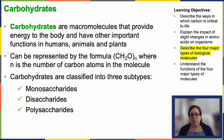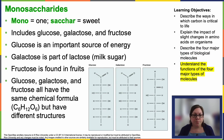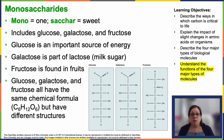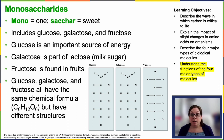Carbohydrates are vital both as an energy source and as structural elements. The basic building blocks of carbohydrates are simple sugars, or monosaccharides. I've got three examples here on the slide. Monosaccharides are the simplest carbohydrates, consisting of a single sugar unit. Common monosaccharides include glucose, the primary source of energy for cells; fructose, which is found in fruit; and galactose, which is a component of lactose.